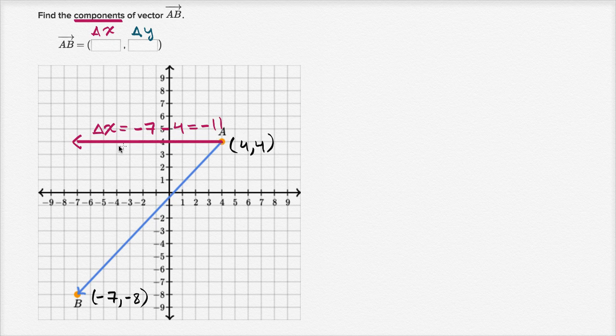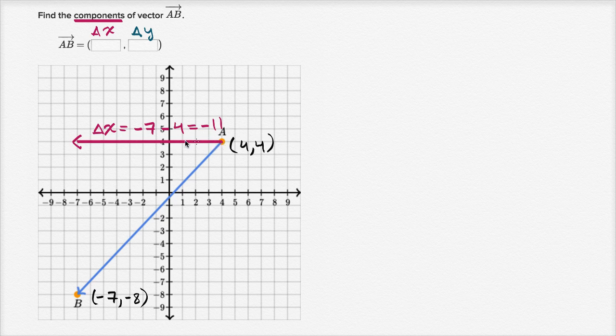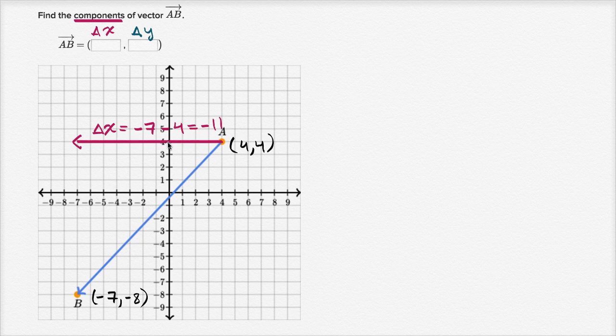The negative tells us that we decreased in x by 11. And you could see that if you visually count the squares. You could say, look, if I'm going from four to negative seven, I have to go left four just to get back to x equals zero, and then I have to go left another seven. So I have to go to the left 11 spaces. So that's my x component, negative 11.